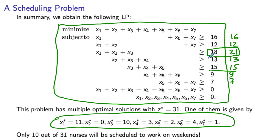This is a very efficient schedule — the only day nurses can relax a little is Wednesday. Looking at the weekend constraint, if we sum up x1, x2, and x3, we get 21, which is the total number of nurses not working during the weekend. So out of 31 nurses, 21 don't work during the weekend and only 10 do — well above the target of having at least half the nurses off on weekends. We'll see you next time.